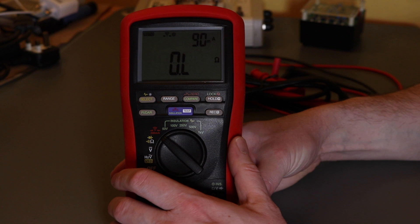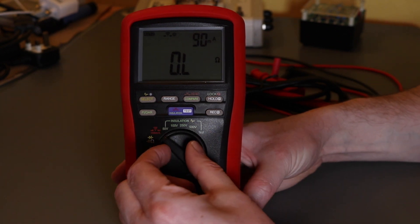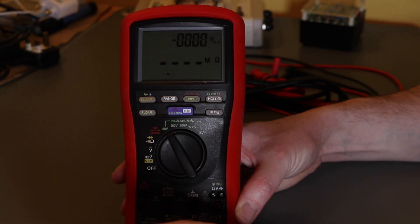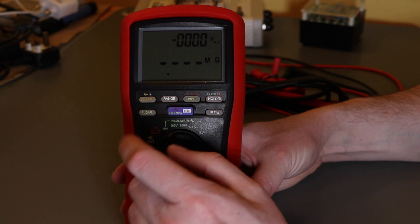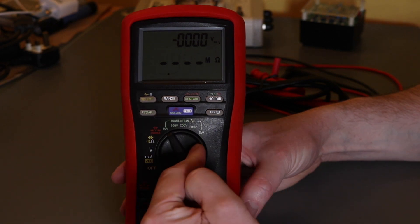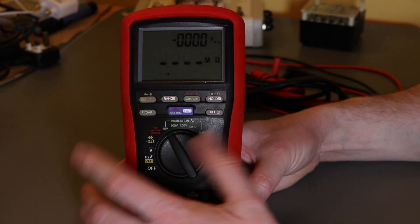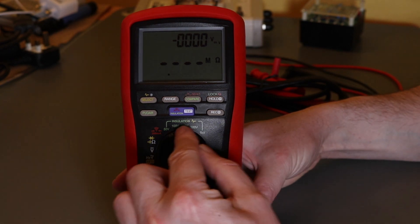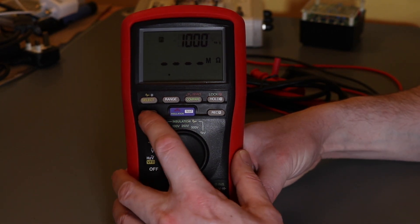Two ranges on that: 90 milliamp and 200 milliamp. Then we move on to the insulation resistance ranges, 50 volts all the way up to 1000 volts.